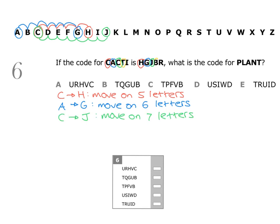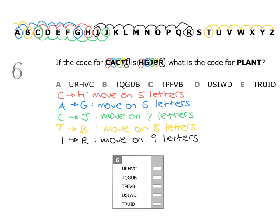Then we have the letter T and the letter B. T is here and B is here, so to get from T to B we need to move on eight letters. We also check I and R — I is here, R is here, so we need to move on nine letters. So we're definitely moving on one more letter each time, starting with moving on five letters.